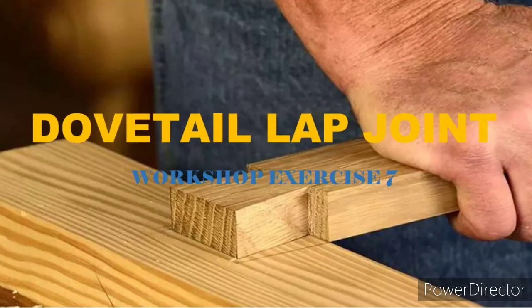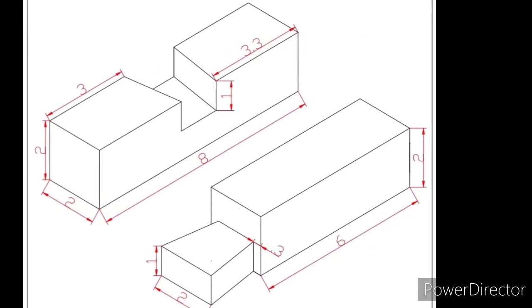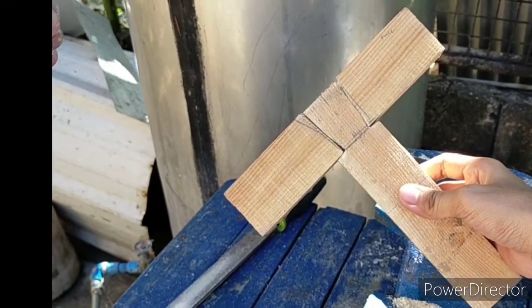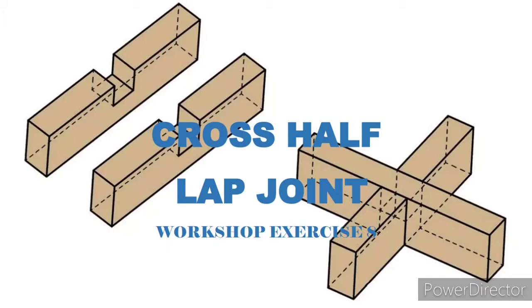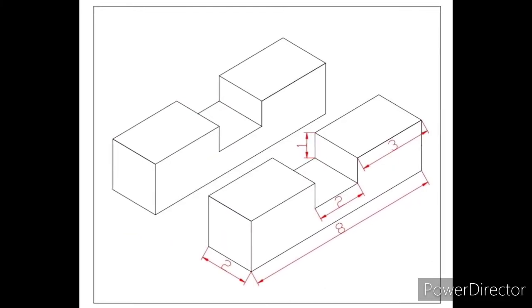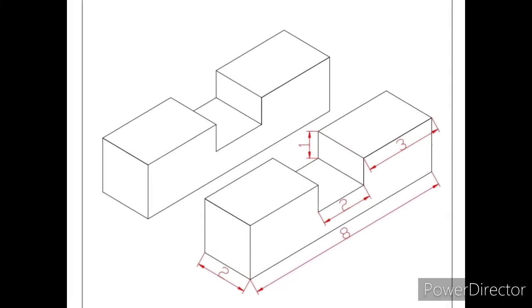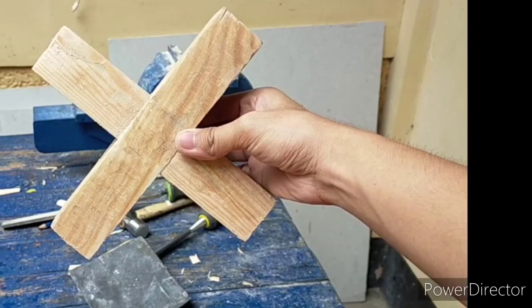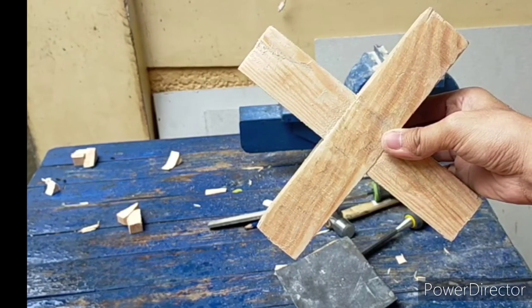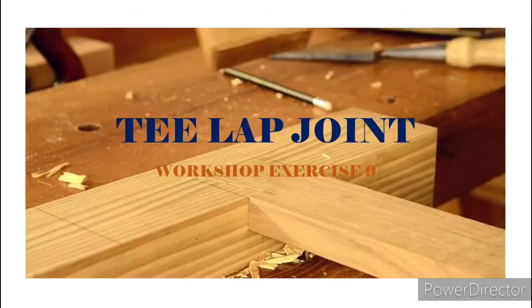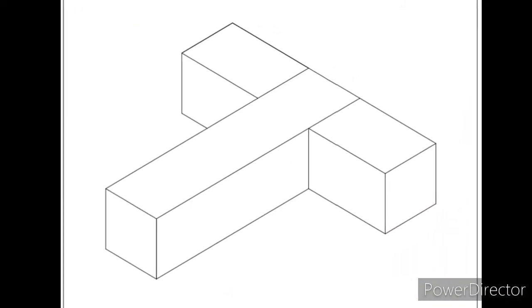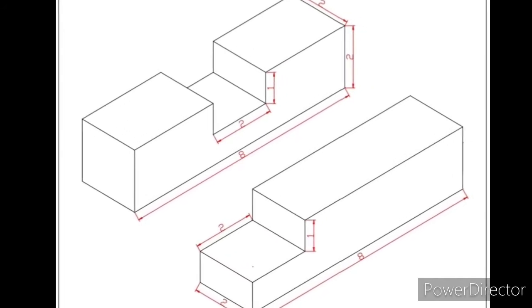Dovetail Lap Joint: Its most common application is joining top rails to the sides of a carcase or to the legs of a table. Due to its wedge shape, the dovetail is extremely effective at locking parts together. Cross-Half Lap Joint consists of two pieces of wood joined together at right angles by overlapping them in the middle of one or both members. Precise measurement results in parts that neatly interlock with flush faces, and in some cases the joint is strong enough without needing nails, screws, or glue. Cross-half lap joints are used in shoe racks, book shelves, and kitchen shelves. Workshop Exercise No. 9: Tail Lap Joint is effective when joining two wood components that are adjacent and perpendicular to each other.